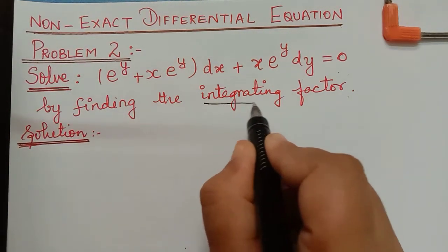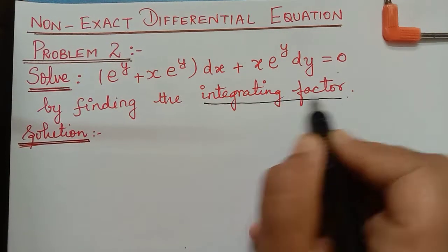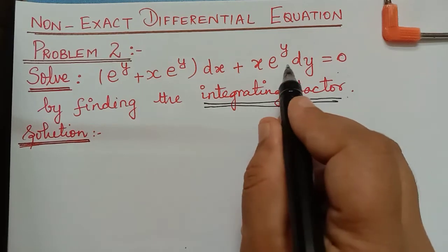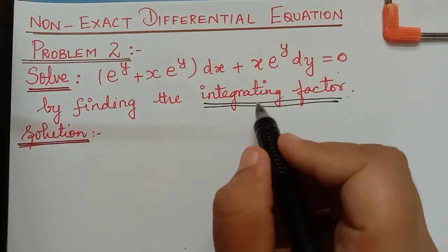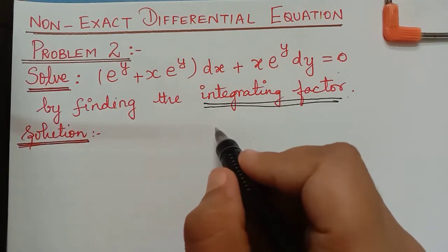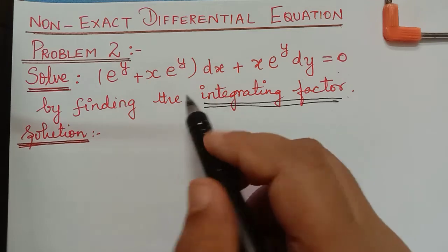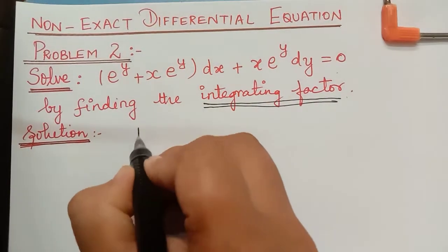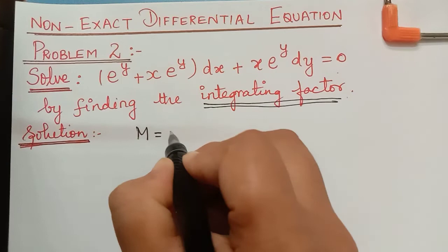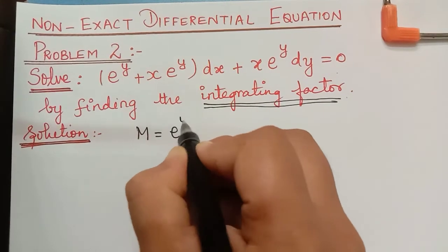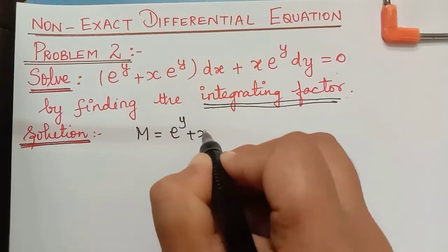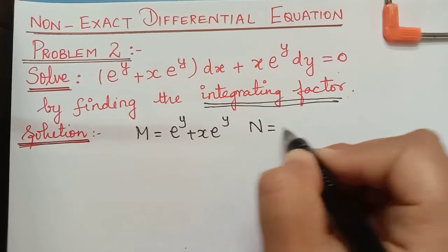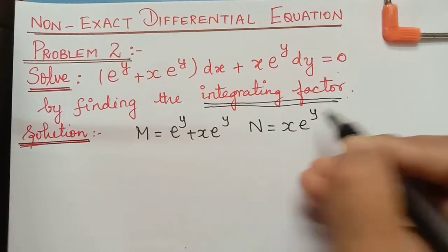Because they have asked us to find the integrating factor and then solve this equation, we will be doing so. First we will check the exactness of this equation. We know that M = e^y + x·e^y and N = x·e^y.